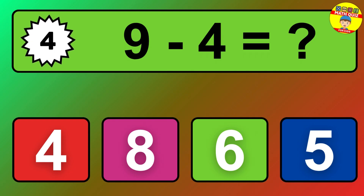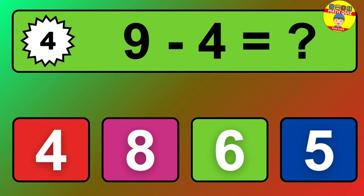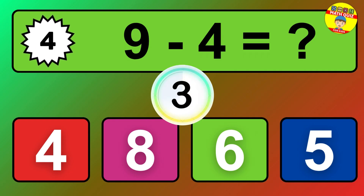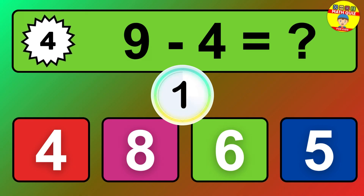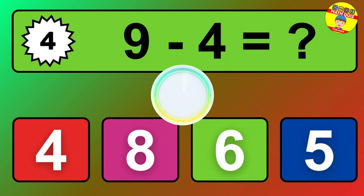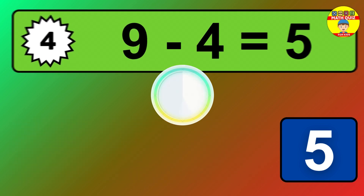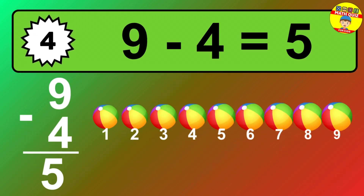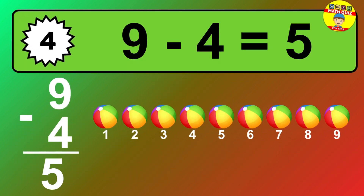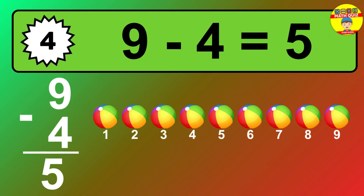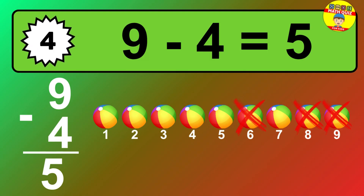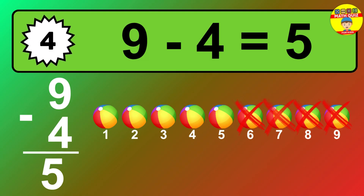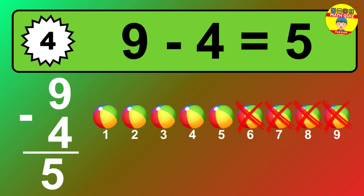Question four: nine minus four equals what? So the answer is nine minus four is five. Let's count it: one, two, three, four, five.